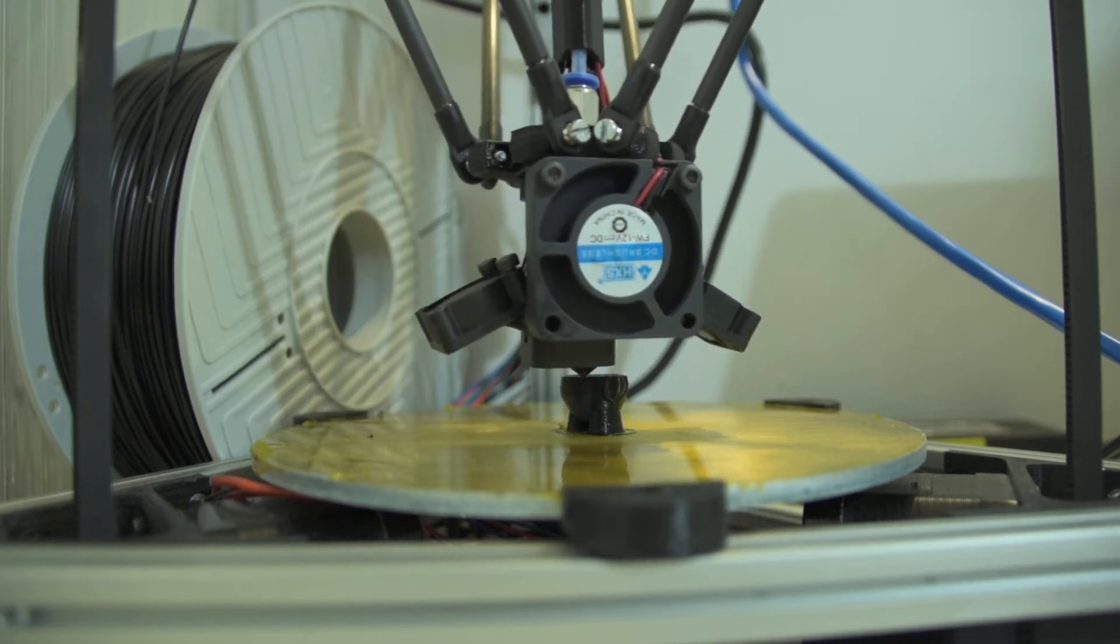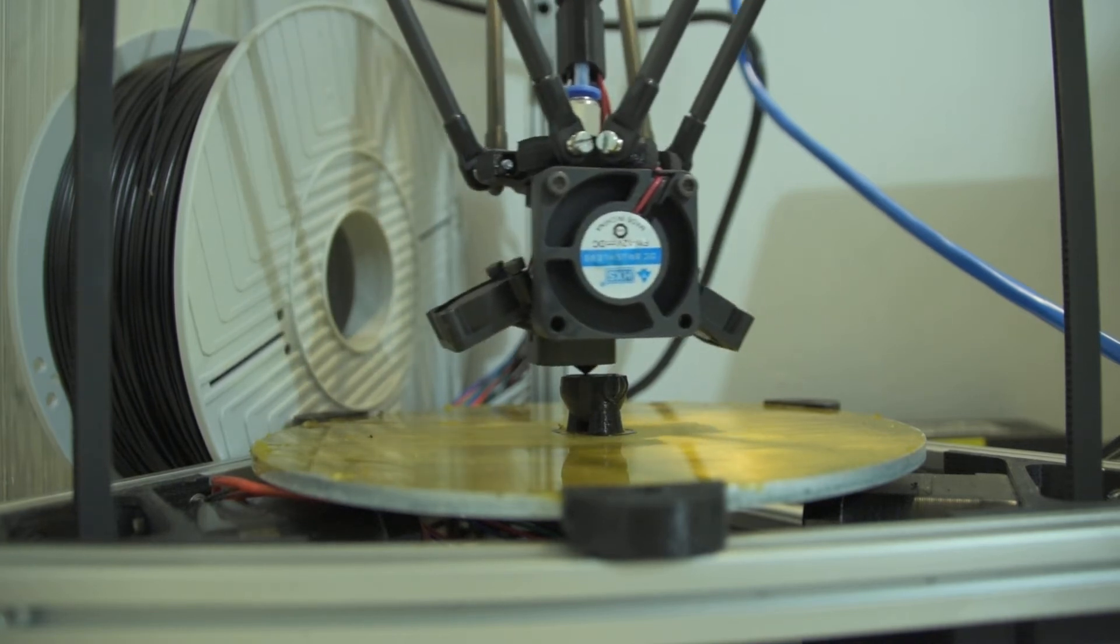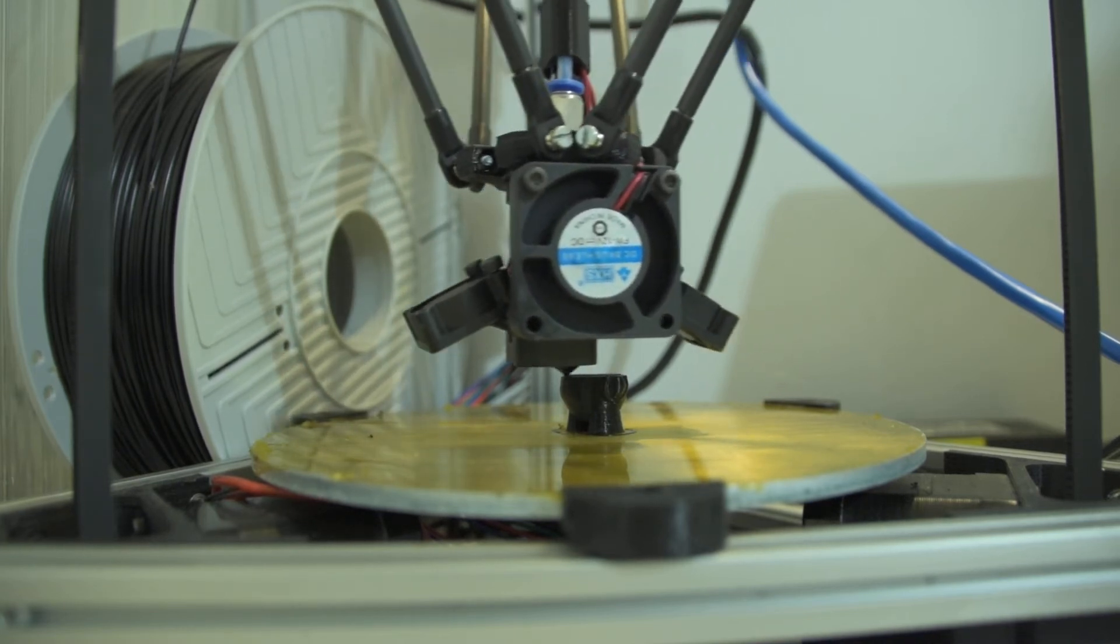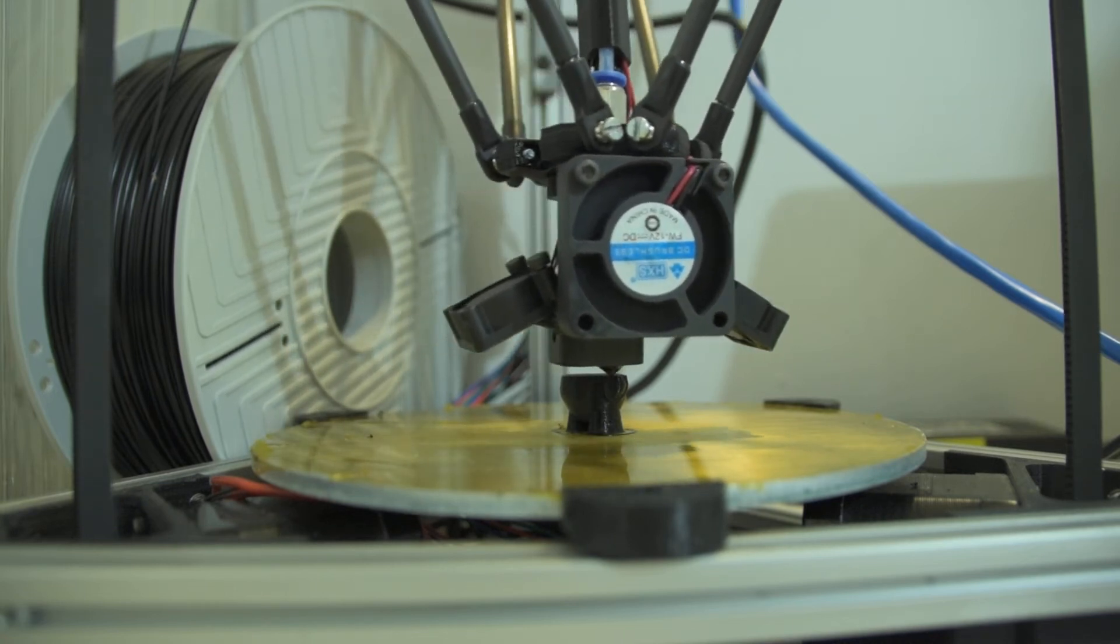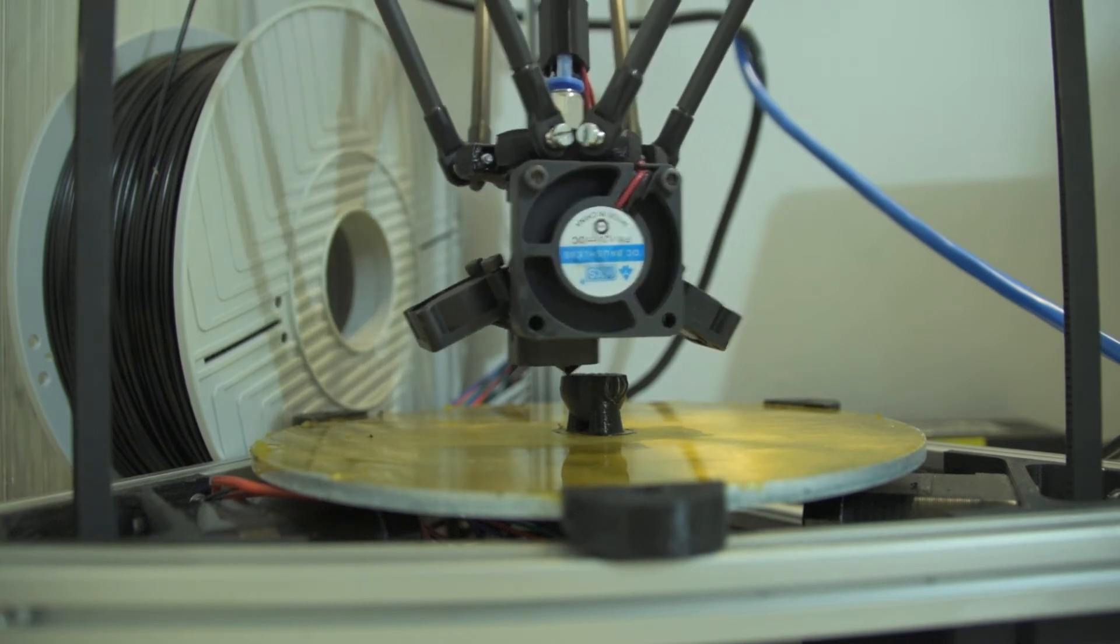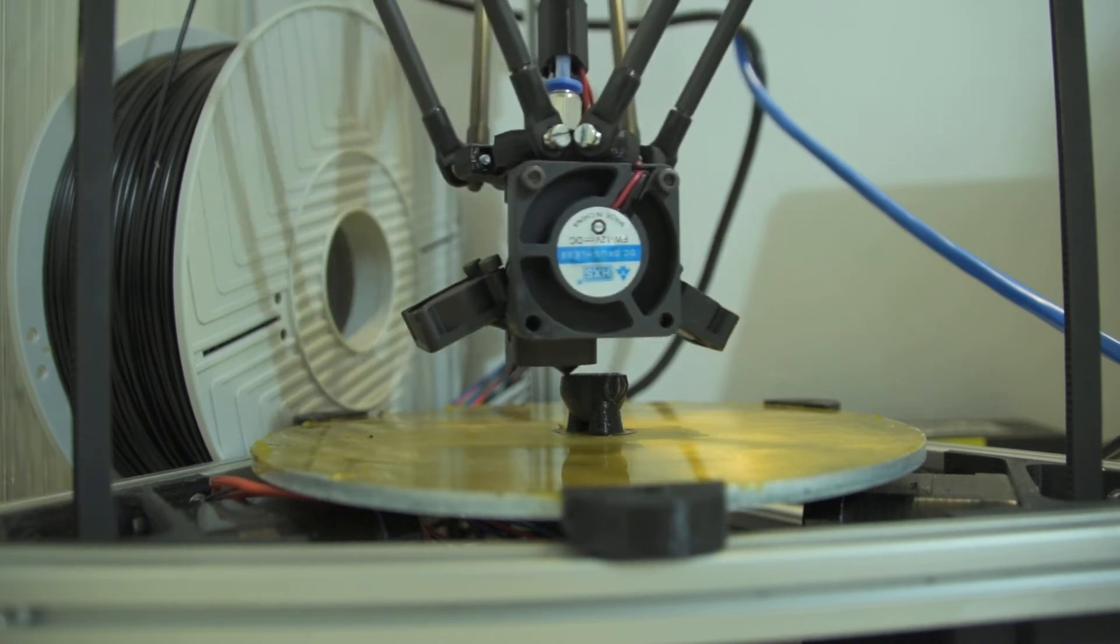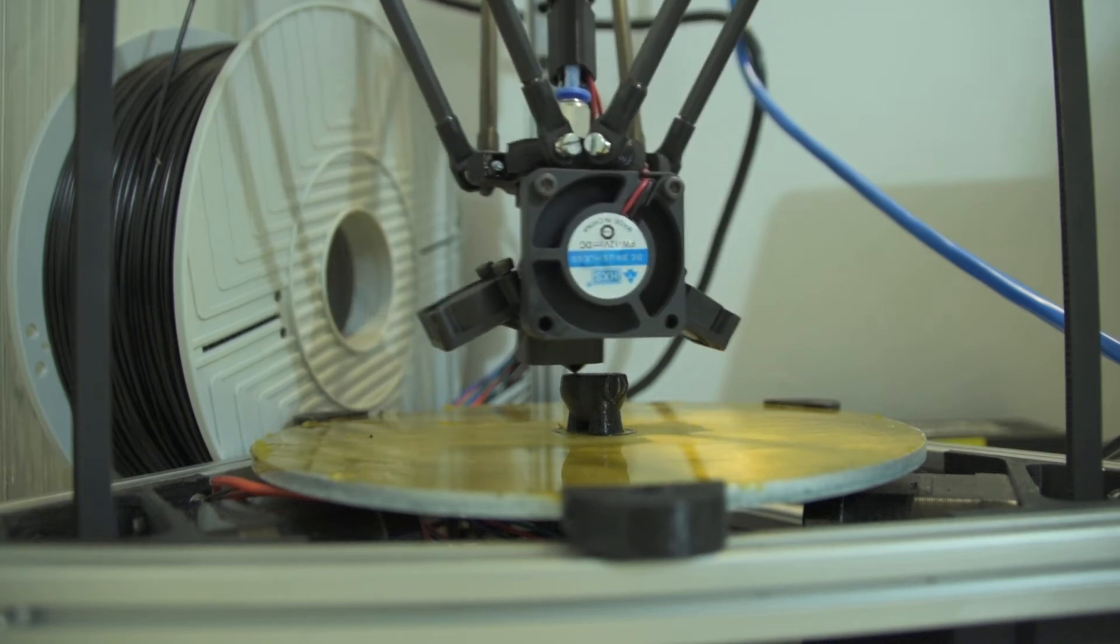Then you just push that, whatever that is, into the path planner, which is written in C. So what's happening now is this is a delta printer running, and it's printing a Marvin figure. That in itself is not very special.